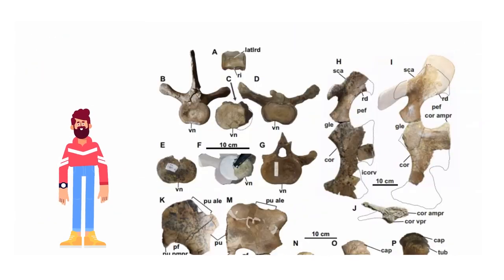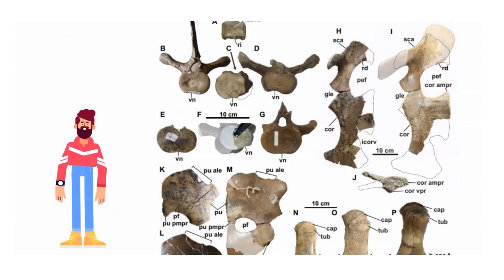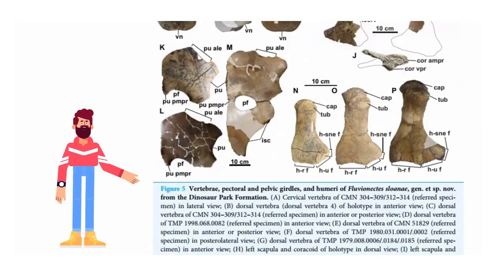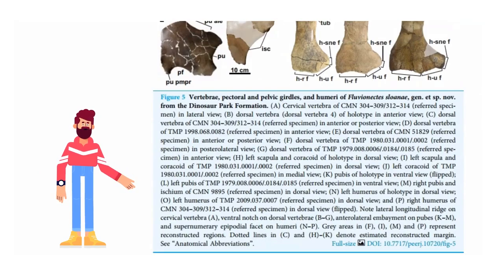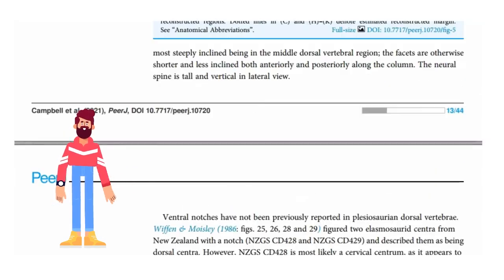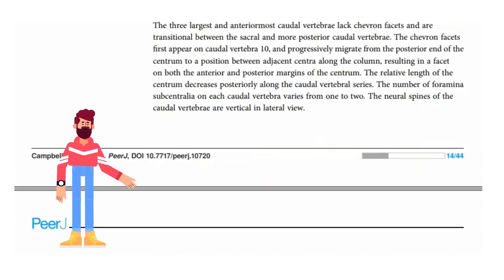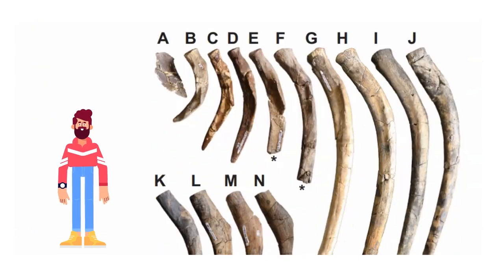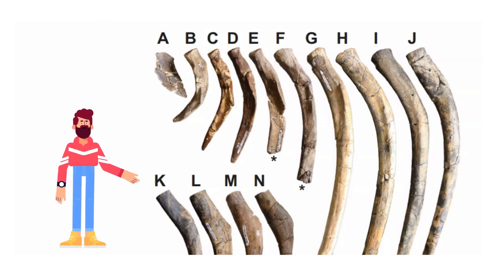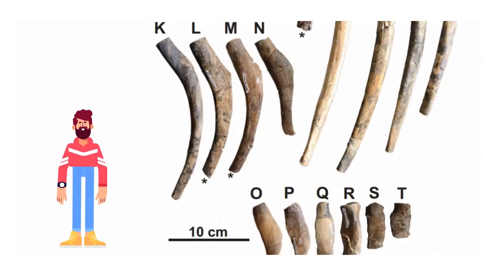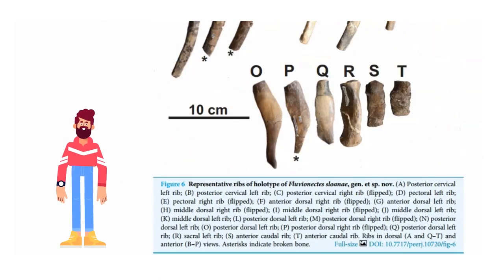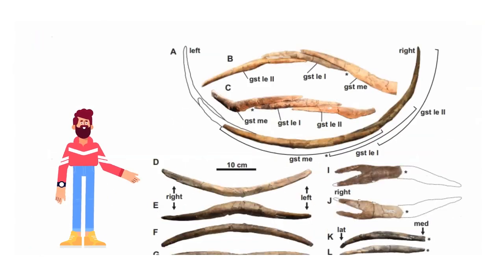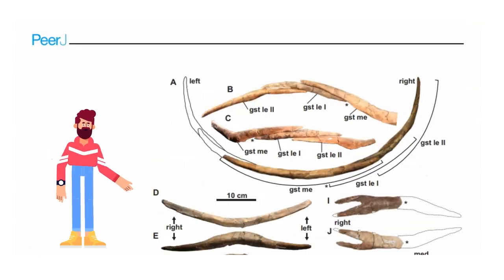This new taxon is diagnosed by a distinctive character-state combination including a boomerang-shaped clavicular arch with acute anterior process, convex anterolateral margin, deeply embayed posterior margin, and pronounced ventral keel, together with the presence of 22 dorsal vertebrae, and the anterior dorsal centra bearing a ventral notch.